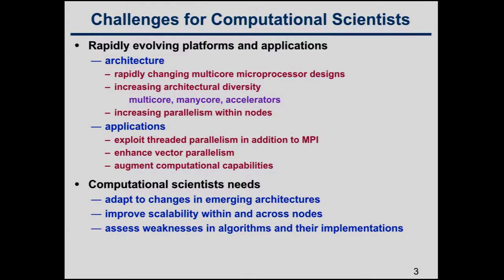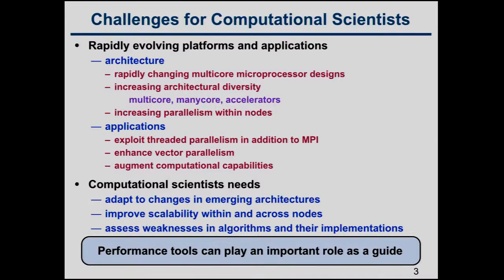What you need are some guidance to adapt to changes in the emerging architectures, to improve your scalability of your codes both within and across nodes, and also to assess weaknesses in your algorithms or particular issues associated with the implementation. It might not be the algorithm, but just some issues in the implementation that can cause significant performance losses. Our contention is that performance tools can really play an important role as a guide — not talking about getting the last couple percent of performance, but discovering gaping wounds where you might be missing things by a large integer factor or your scalability is off, which will prevent you from using any of these large-scale machines effectively.